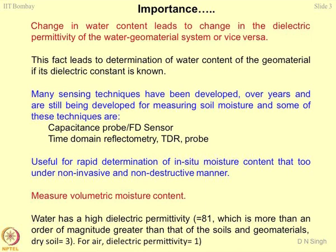These are the two categories of sensors or probes being used for determining soil moisture content. When we say soil moisture content, most of the time these are volumetric moisture contents of the material. All these sensors and concepts are very useful for rapid determination of in-situ moisture content, and that too in a non-invasive and non-destructive manner. Present-day research is more focused on non-destructive, non-invasive techniques, meaning you should not disturb the matrix of the soil mass.